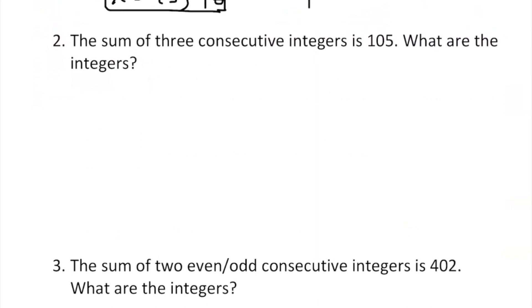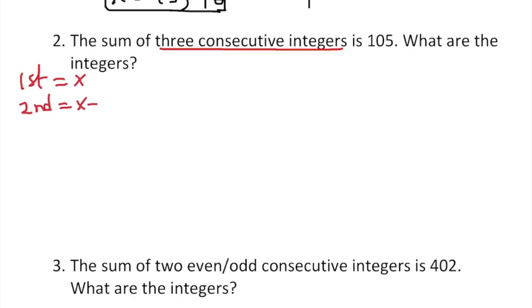Let's move to the next problem. This time we have three consecutive integers whose sum is 105 — not two, but three consecutive integers. The first one is x, the second one is x plus one, and the third one is x plus two. That's one after another.